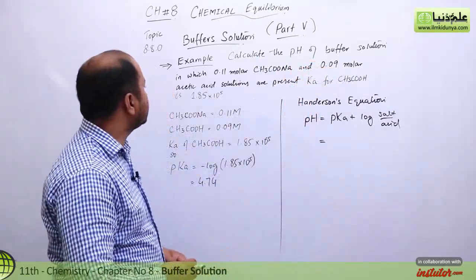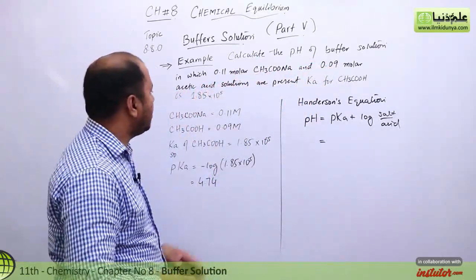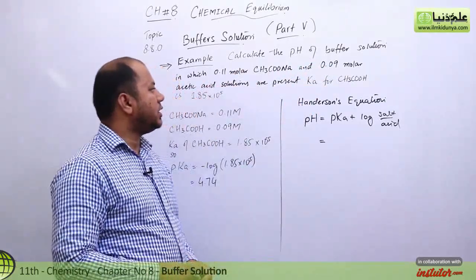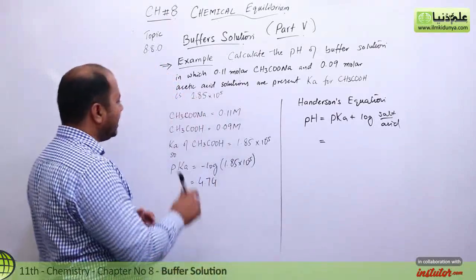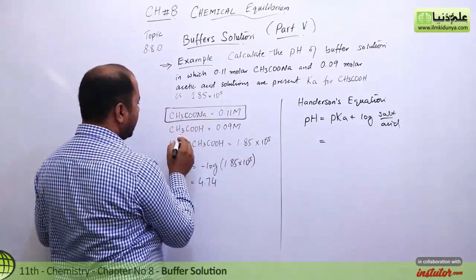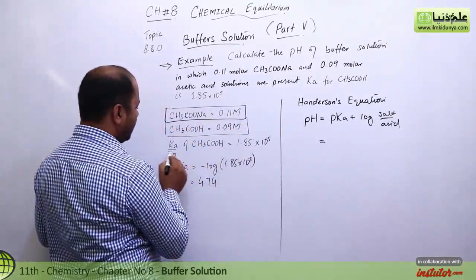Calculate the pH of buffer solution in which the molar concentration of sodium acetate and acetic acid are given, and the dissociation constant Ka of acetic acid is 1.85 × 10^-5.